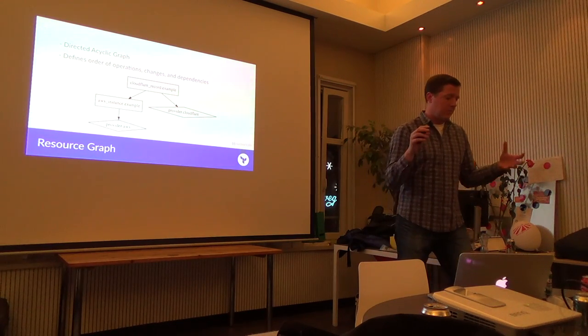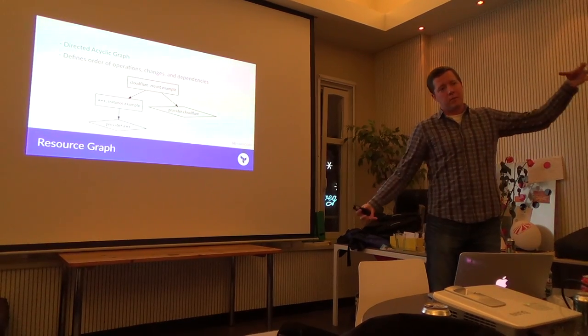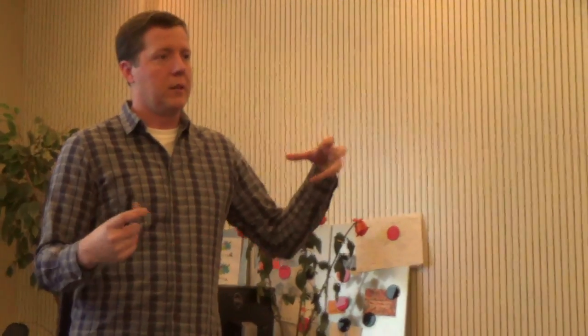About the resource graph: based on your configuration and how you relate your resources together, Terraform internally builds a graph of your resources and determines the order of operations to make changes. One of the commands available within Terraform is to get a visual graph output so you can see those relations and see where resources intersect and will be affected by changes. Really powerful feature.